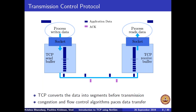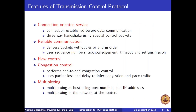TCP is a connection-oriented service — it establishes a connection before data communication. During connection establishment, the sender and receiver allocate buffers and initialize state variables so that reliable communication can be enabled. Unlike UDP, a connection is established using a three-way handshake, which uses special control packets and specific fields in the TCP header.